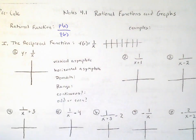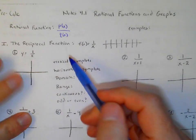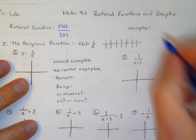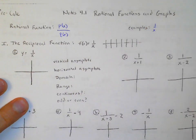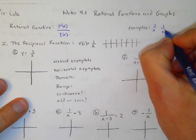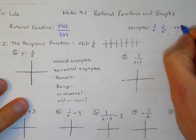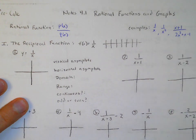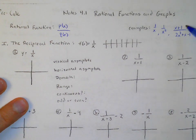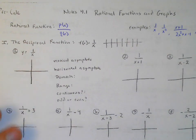The denominator can't be zero because you can't divide by zero. Some examples of rational functions might be like 1 over x, 1 over x squared, or x plus 1 over 2x squared plus x minus 1. It's just one polynomial divided by another, and it can get more complicated than that, but those are just basic examples.